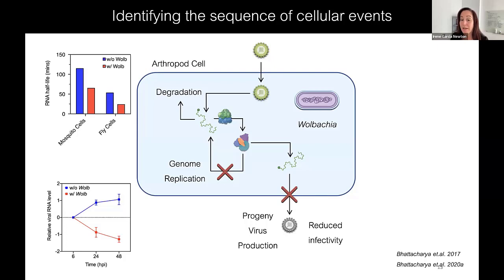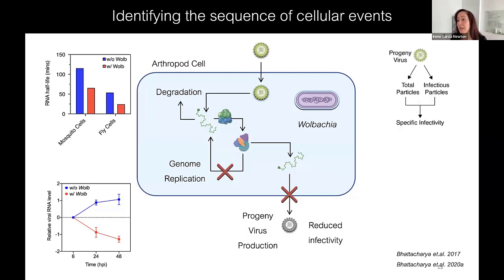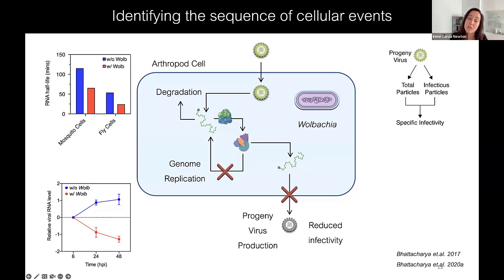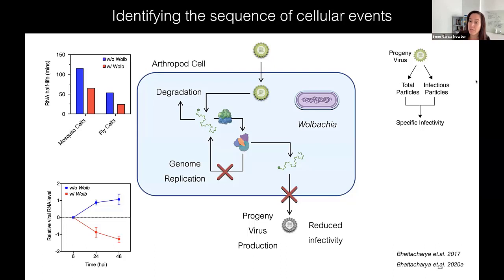We also know that the progeny virions produced in the context of a Wolbachia-infected cell have reduced infectivity. All the progeny viruses coming out of the cell include both infectious and non-infectious particles. You can count the total number and count infectious particles by counting plaques to get specific infectivity. Wolbachia really alters specific infectivity, reducing the proportion of the population that can initiate a new round of infection.